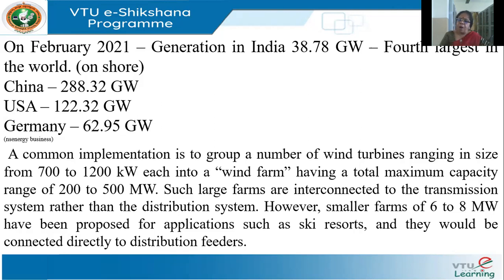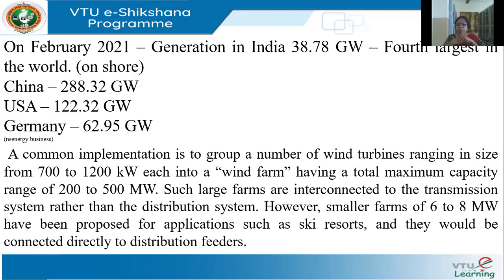Generally, a wind farm has a capacity of around 200 to 500 megawatts. Unlike a thermal plant where you can have one huge 500 MW turbine-alternator, that is not done with wind. Individual wind turbines are normally in the range of around 700 to 1200 kilowatts, and a number of them are aggregated into a wind farm to generate around 200 to 500 megawatts.